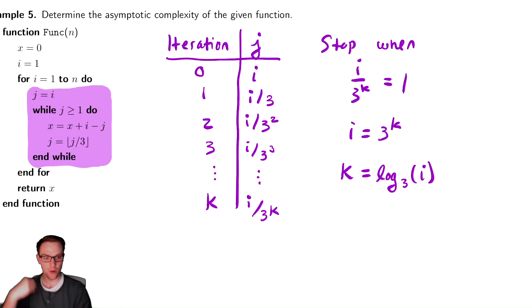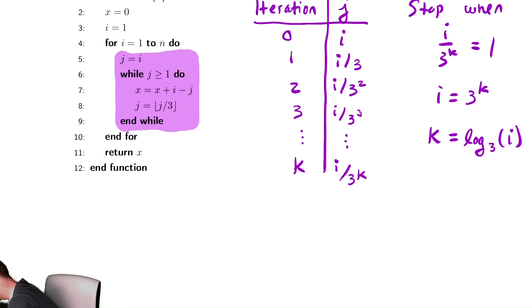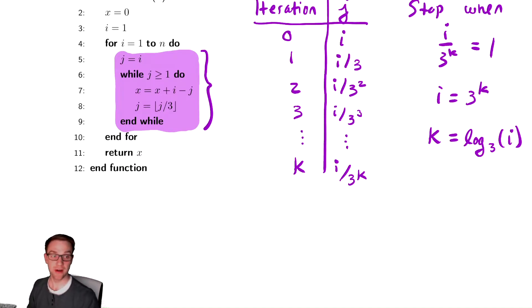That tells me how many times does the while loop run. If we look at the code, the cost of each run is constant. So the cost of the code I highlighted in purple is the number of runs times the cost. So the purple code takes C log base 3 of i time. If that was the only thing we had, that would be our runtime.